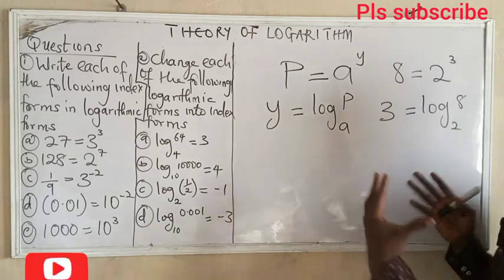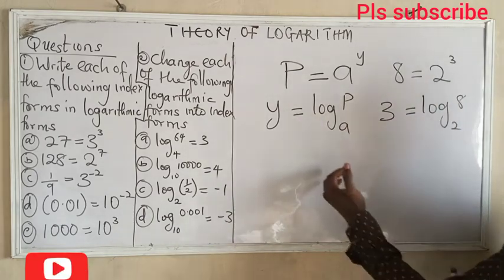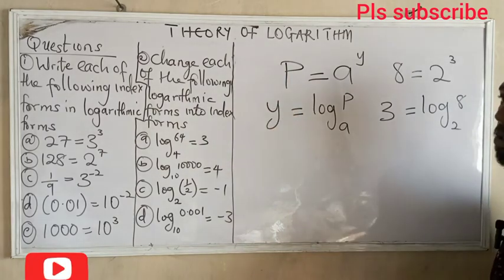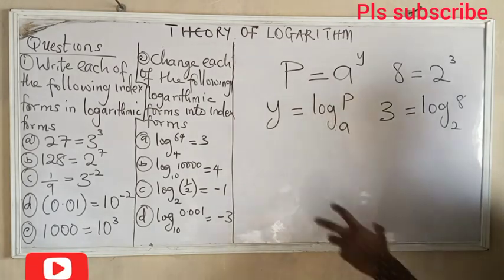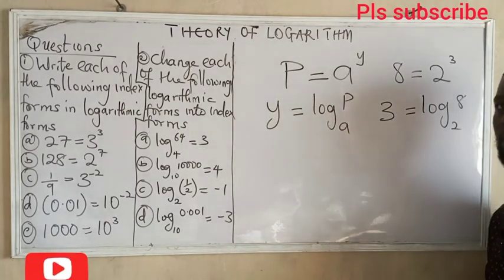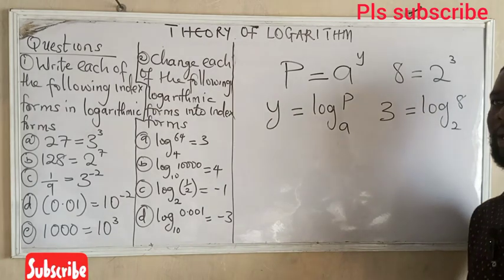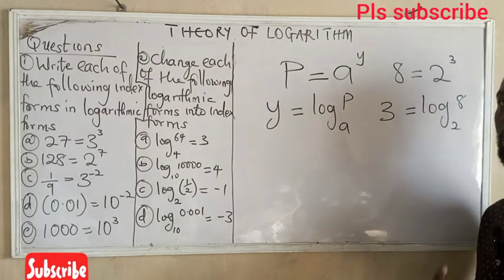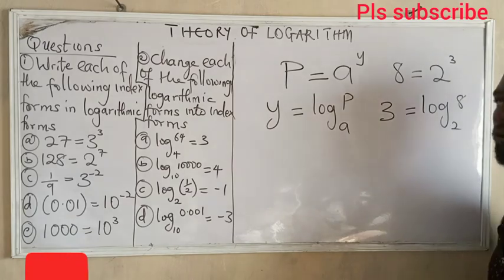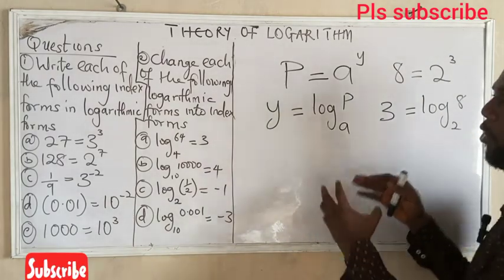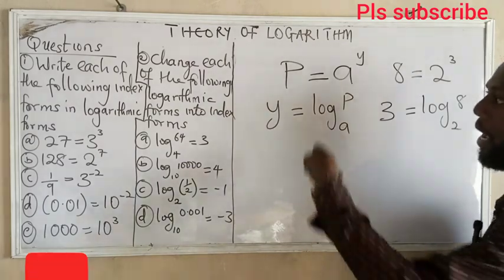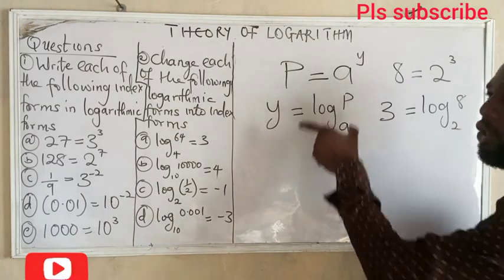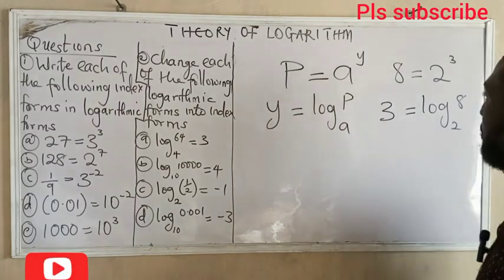We are trying to look at the relationship between exponentiation, or index form, and logarithmic form. Logarithmic form is a kind of an inverse of index form. So for every logarithmic equation we see, we will always derive an exponential equation.